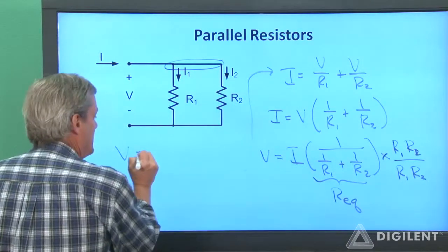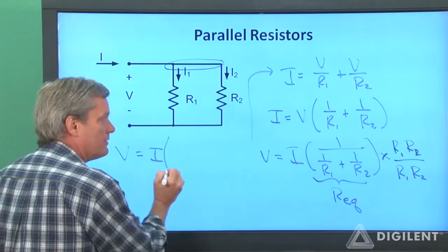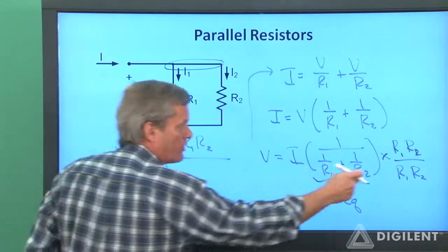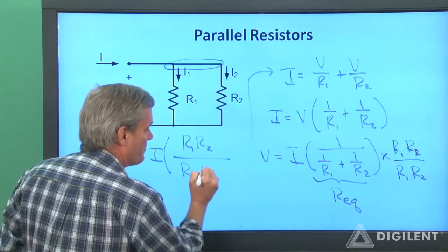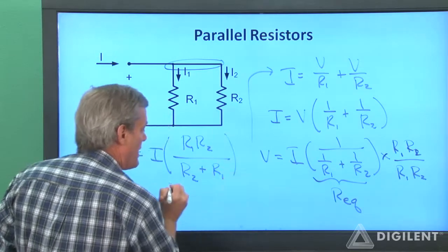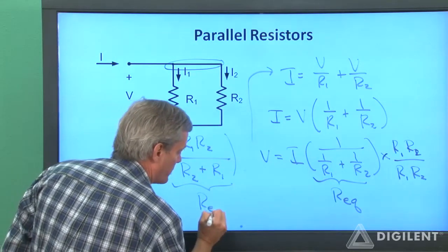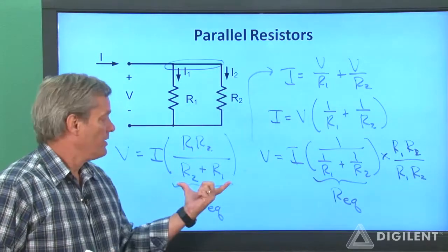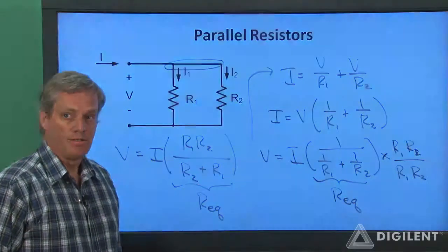Then this is an alternate form for the equivalent resistance of these two resistances. It's the product of the resistances divided by the sum of the two resistances.